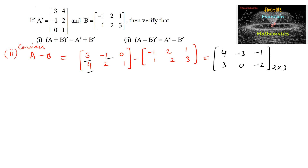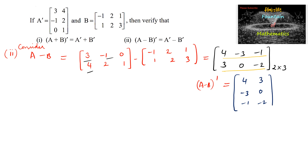Now (A-B) whole transpose: interchange rows and columns. The first row [4, -3, -1] becomes the first column, so we write 4, -3, -1; and the second row [3, 0, -2] becomes the second column, giving 3, 0, -2. So (A-B)^T = [4, 3; -3, 0; -1, -2].